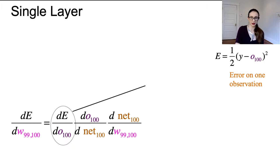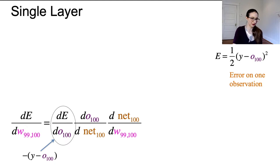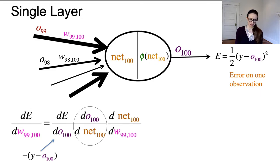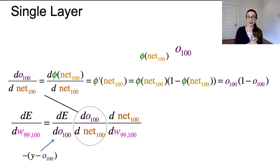Let's compute the derivative of the error with respect to O100. That's really easy — just take the derivative of the error formula directly with respect to O100. The two and the one-half cancel, and we end up with negative (Y minus O100). Now for dO100/dNet100: that requires us to take the derivative of the activation function, because O100 is just phi of net100. The derivative is phi times one minus phi — piece of cake. Since O100 equals phi of net100, the derivative is O100 times (1 minus O100).